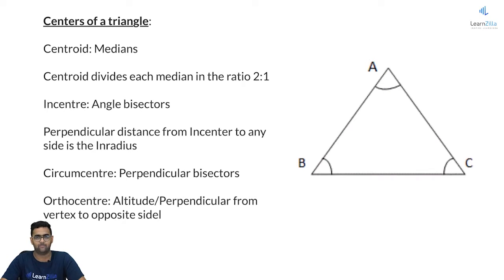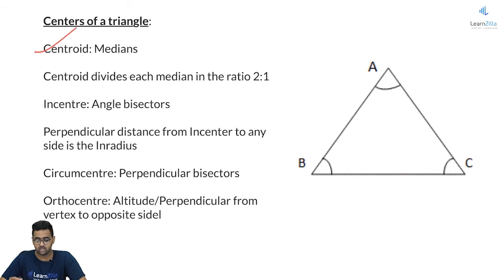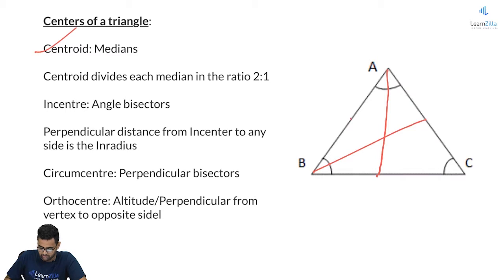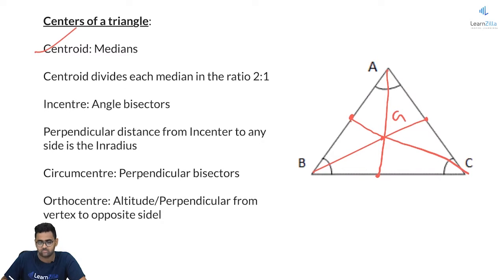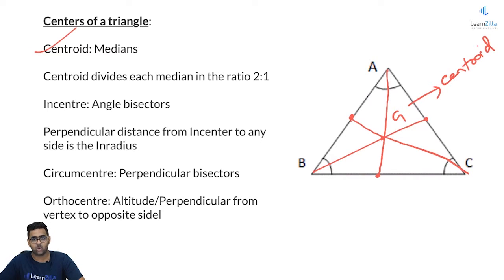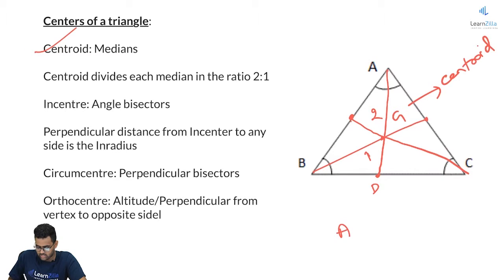Now let us talk about the centers of a triangle. The first is the Centroid, which is the point of intersection of the medians in a triangle. A median is a line drawn from a vertex to the midpoint of the opposite side. So this is the midpoint, this is the midpoint, and this is the midpoint. The point of intersection is called the Centroid — G is my Centroid. Always remember: the Centroid divides the median in the ratio 2:1. If the midpoint is D, then AG to GD is 2:1.